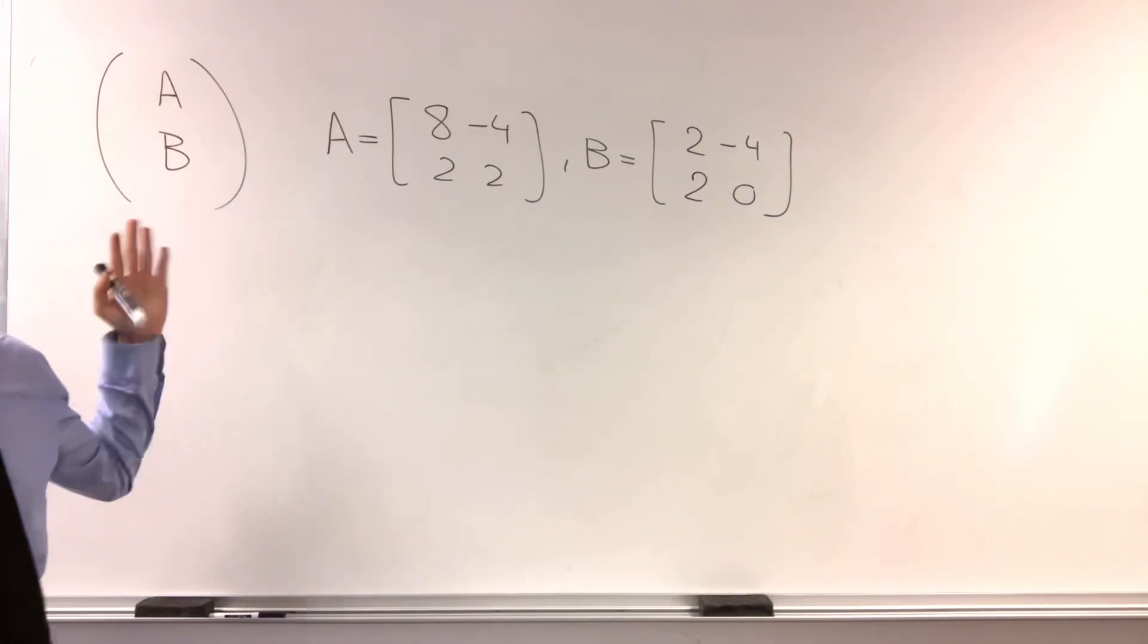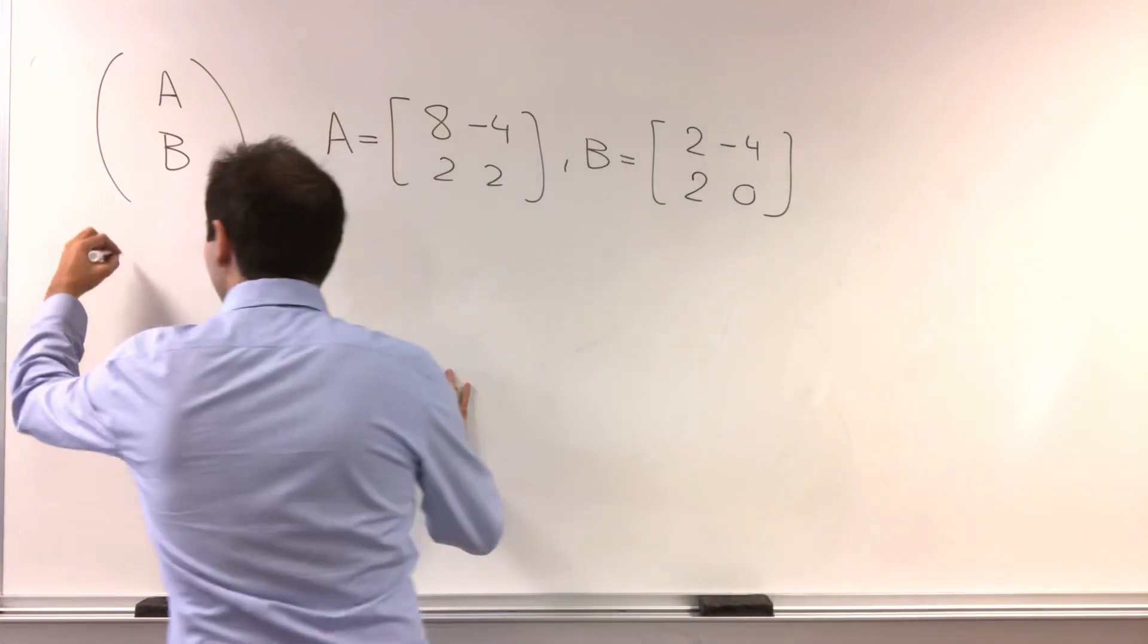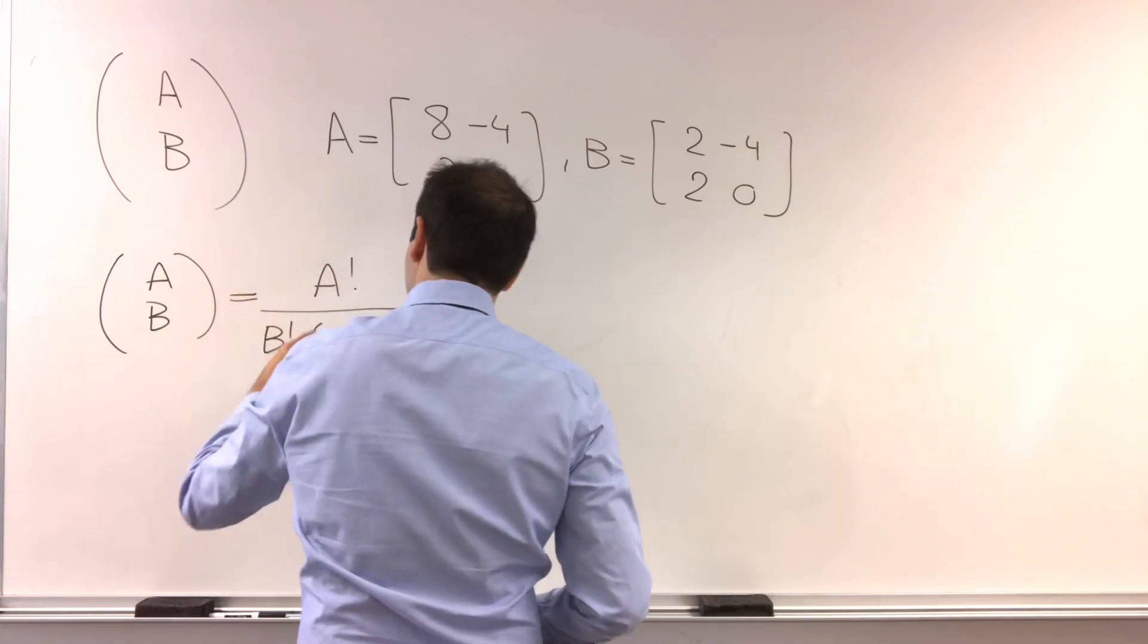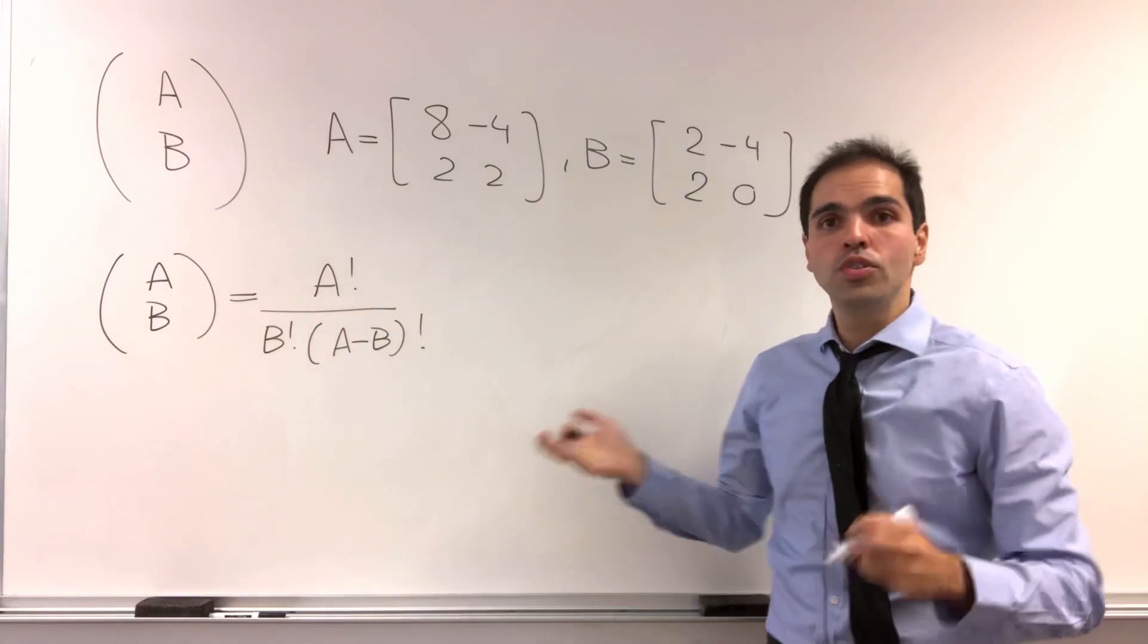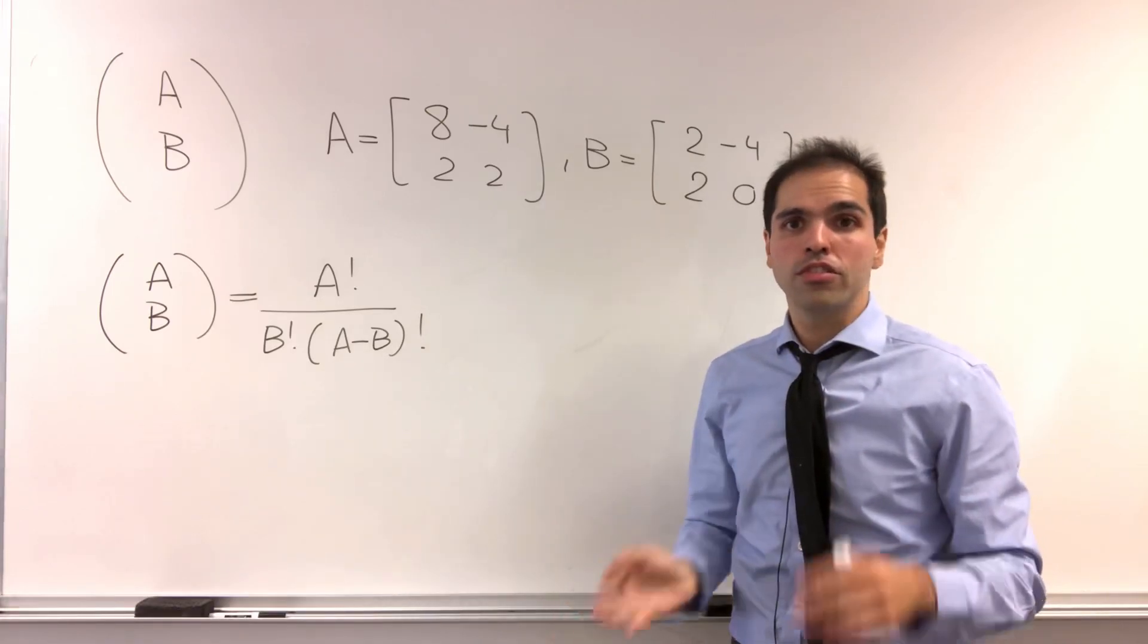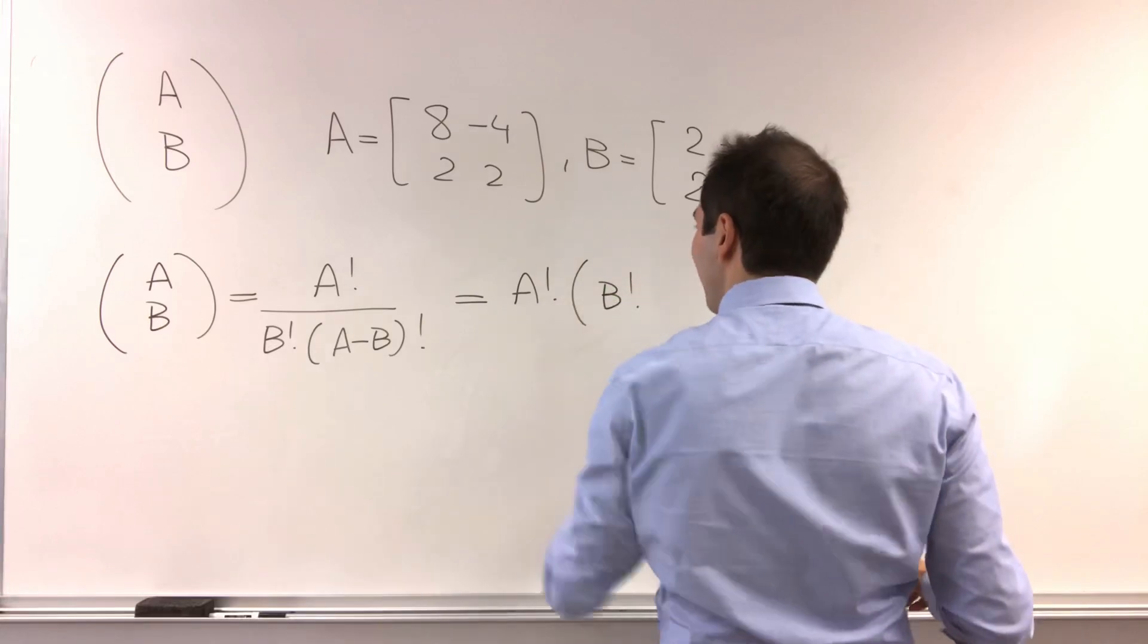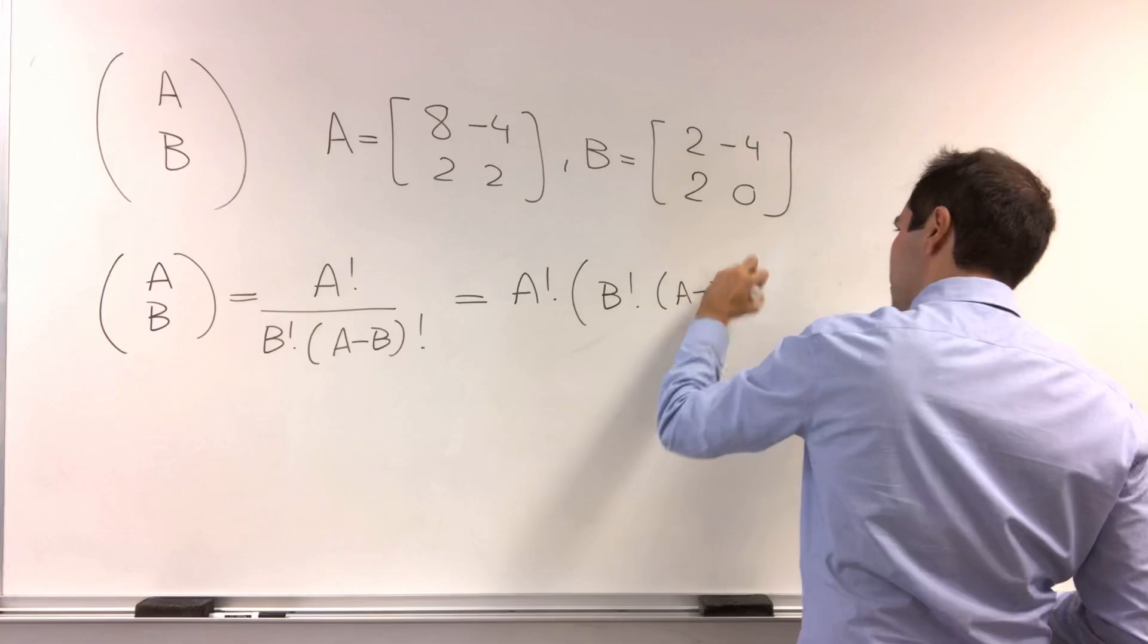However, you'll see it's very easy to define because what is a choose b? Well, if you repeat the definition of combination, this is just a factorial over b factorial times a minus b factorial. Now the question is, do you choose a left or a right inverse? Usually it matters, but you'll see today it won't matter. So in particular, let's just choose the right one. So a factorial times b factorial times a minus b factorial inverse.